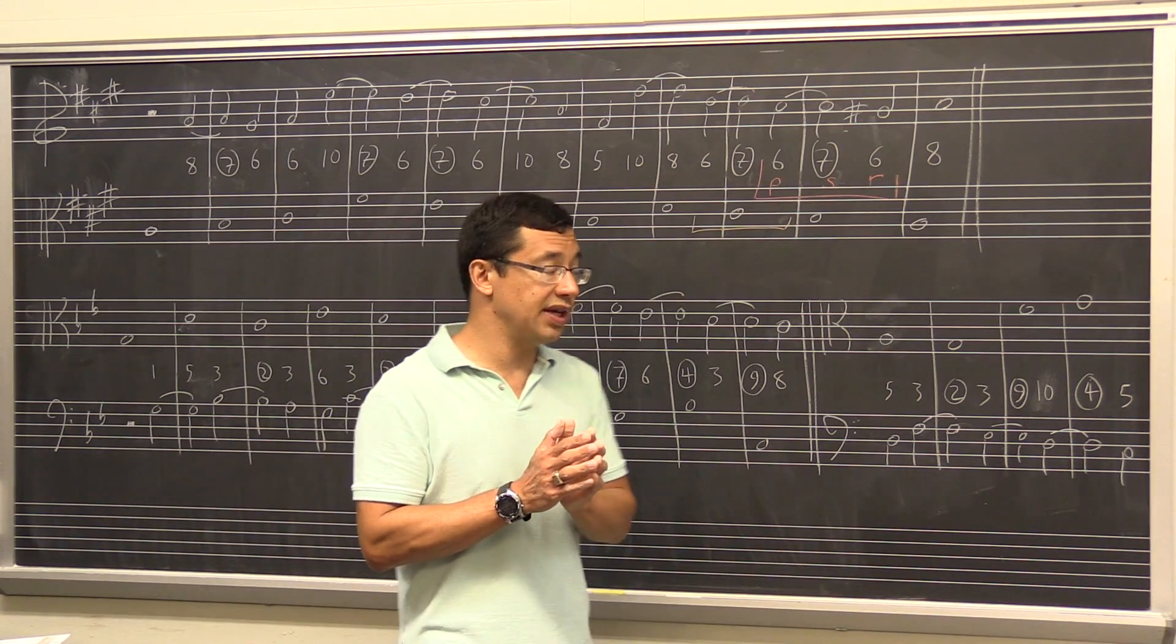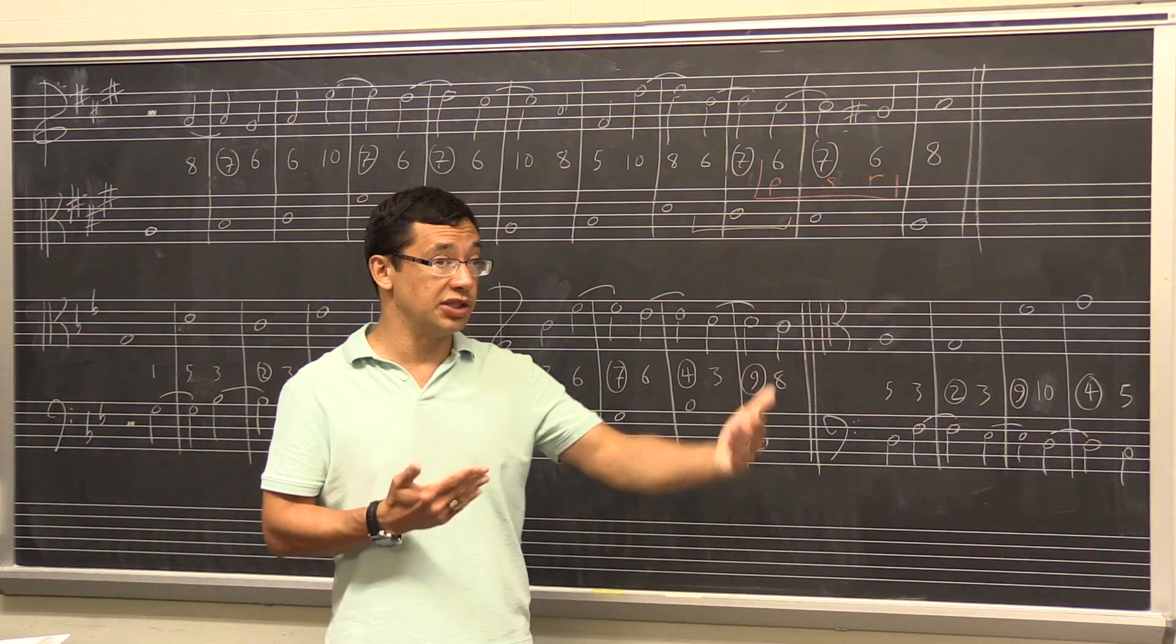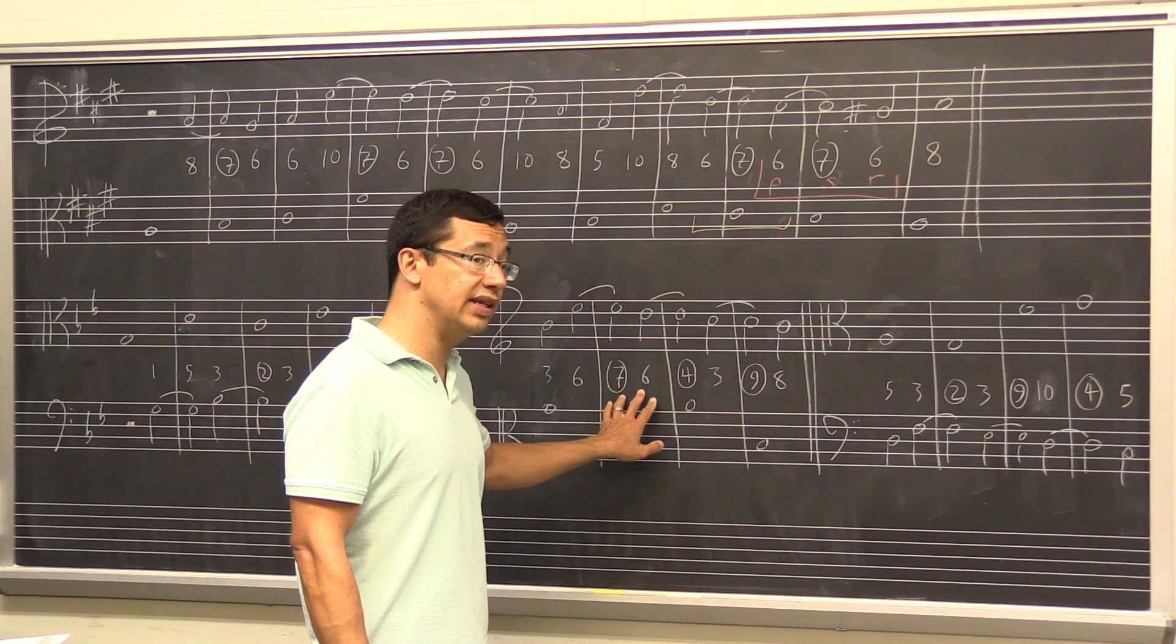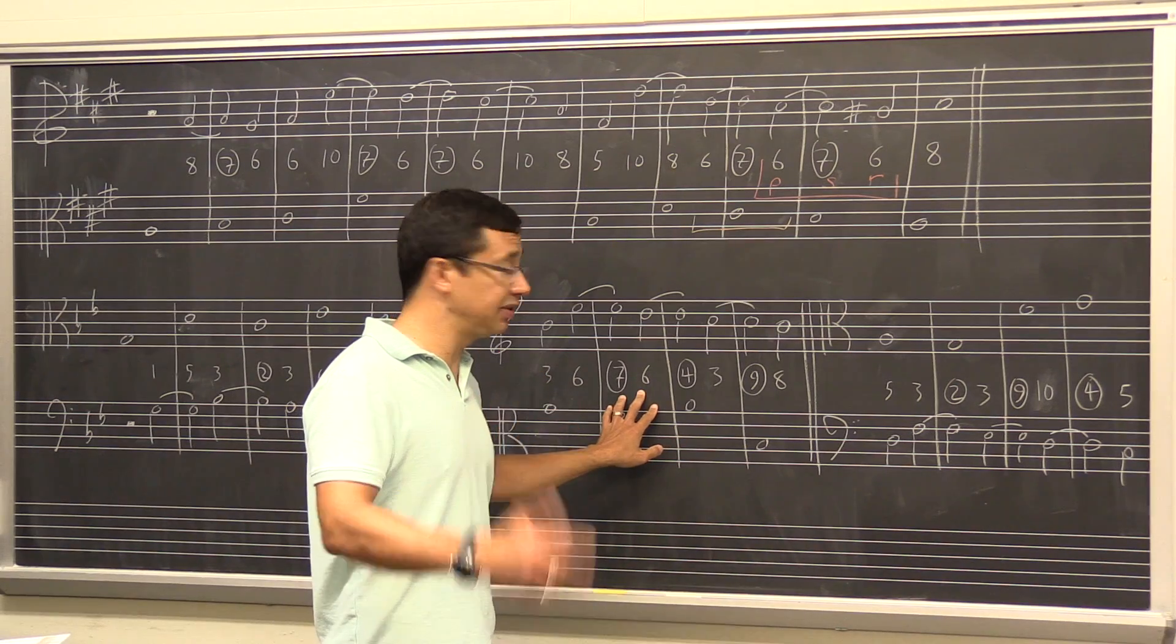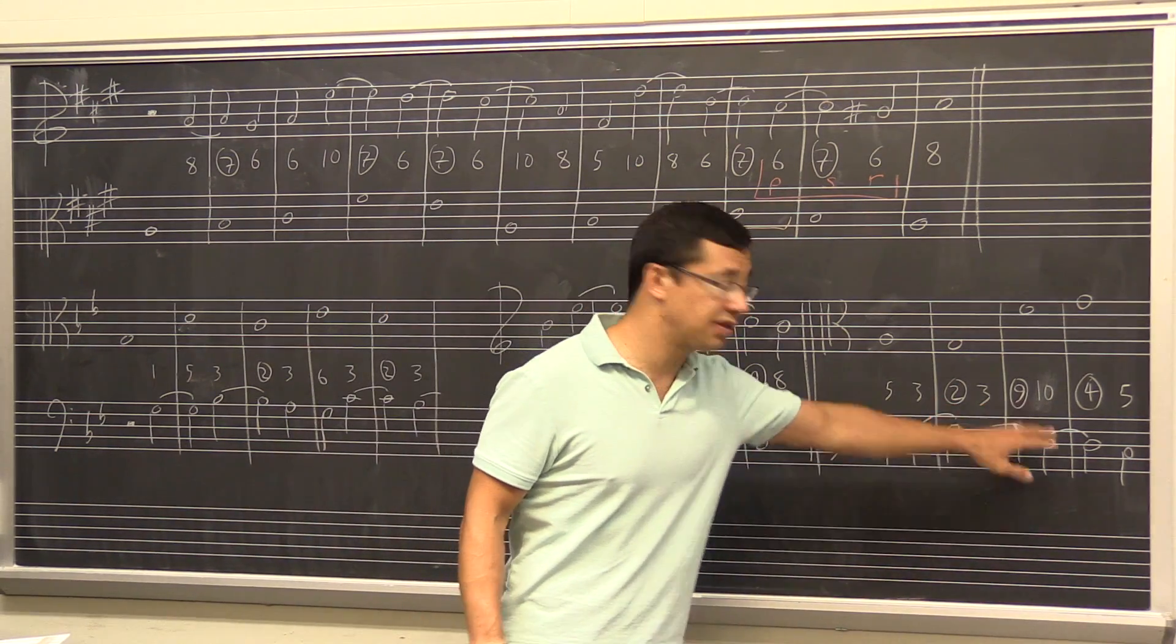In fourth species, the same thing occurs. You're free to have as many suspensions in a row as you want. But if you want to put the same type, so chaining seven-sixes, maximum of three in a row. Chaining four-threes, maximum of three. Same thing with the two-threes and the nine-ten.